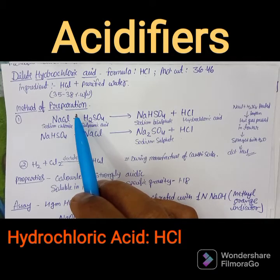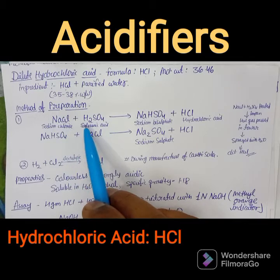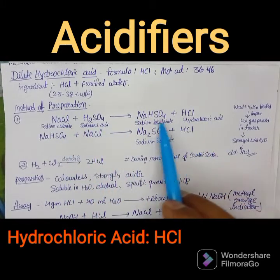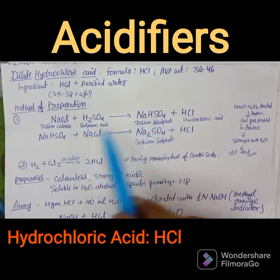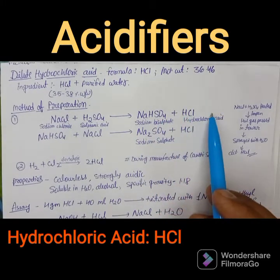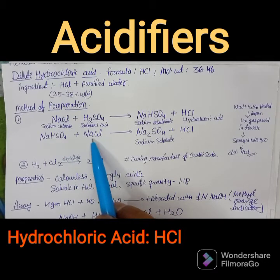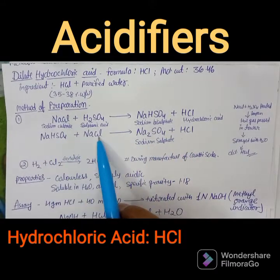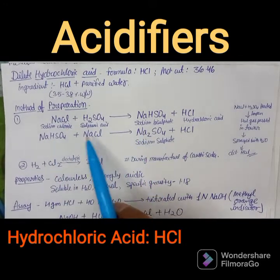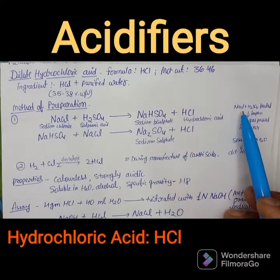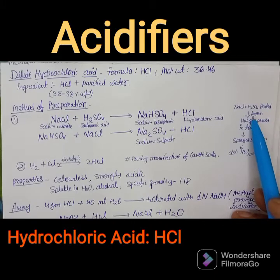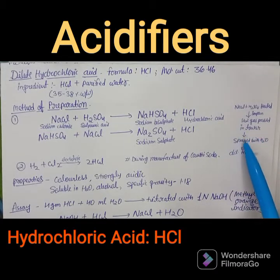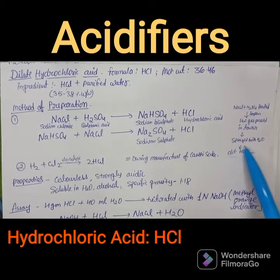For the method of preparation, the first method involves reacting sodium chloride with sulfuric acid: NaCl + H₂SO₄ forms HCl and sodium bisulfate (NaHSO₄). The sodium bisulfate again reacts with sodium chloride to form sodium sulfate (Na₂SO₄) and more HCl. In the laboratory, NaCl and H₂SO₄ are heated in an iron pan; the HCl gas is passed through a tower and absorbed with water to obtain dilute hydrochloric acid.